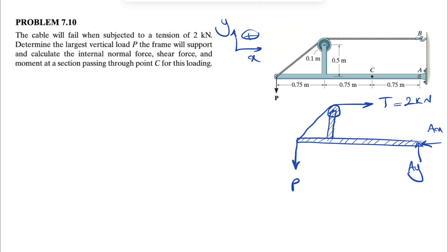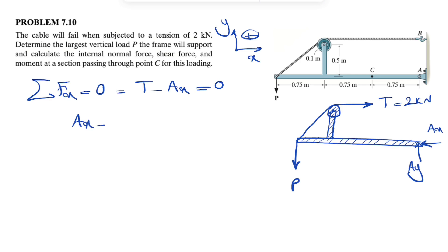We are in equilibrium, so we're going to use our equilibrium equations. Starting with ΣFx = 0, we only have the force T and Ax in the x-direction. Our Ax is equal to the tension in the cable, which is 2 kN.